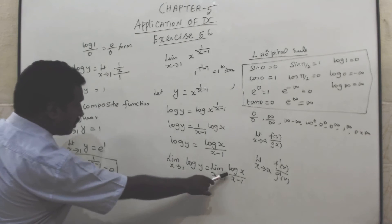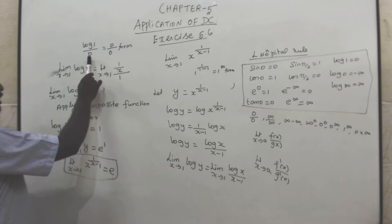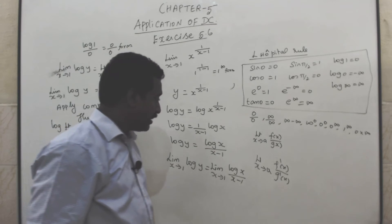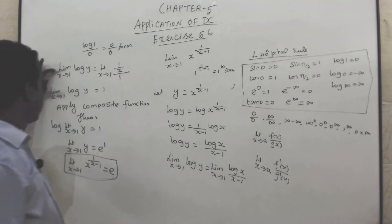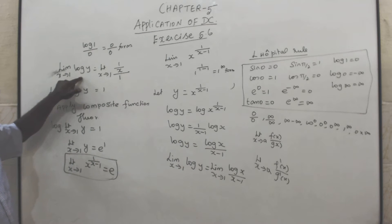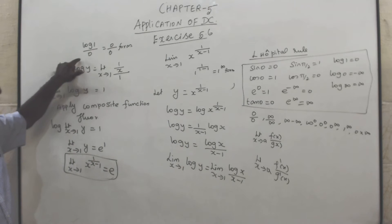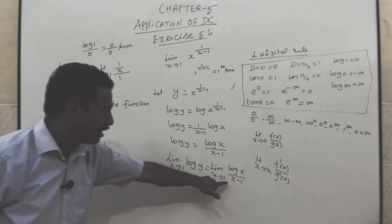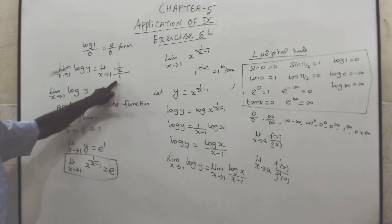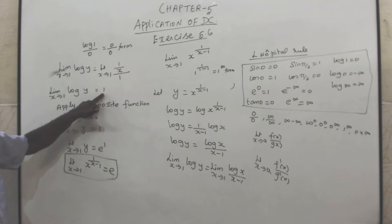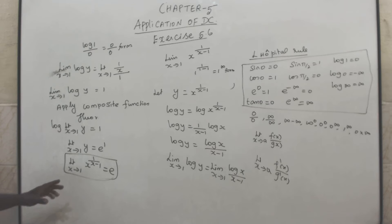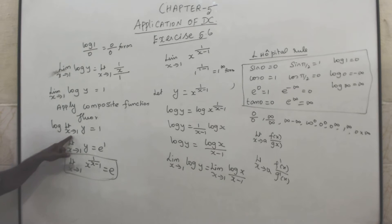Applying the limit: log 1 by 1 minus 1 is 0 by 0 form. So limit x tends to 1 of log y equals limit x tends to 1, and we apply L'Hôpital's rule — differentiate numerator and denominator separately. Differentiating log x gives 1 by x, and 1 by 1 is 1. Apply the composite function theorem, take log out: log of limit x tends to 1 of y equals 1.